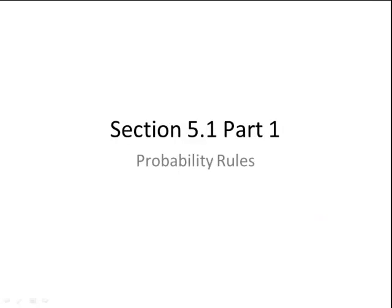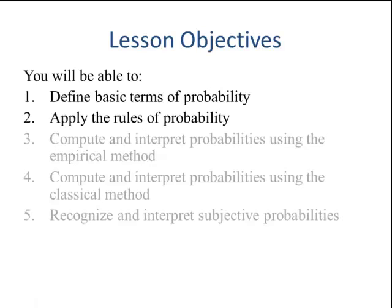Section 5.1, Part 1: Probability Rules. Lesson objectives: Number 1, define the basic terms of probability. Number 2, apply the rules of probability.